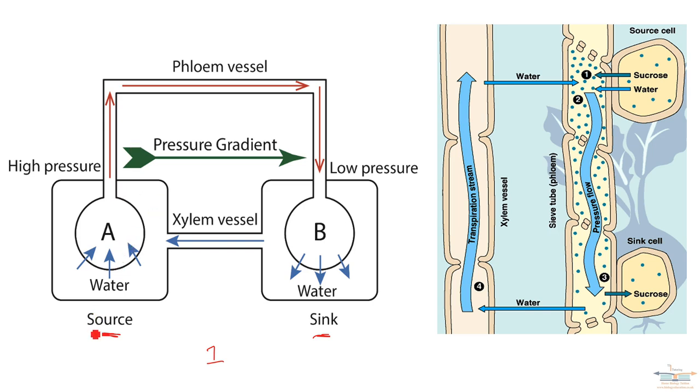So how does this work? Well, at the source, you should be able to name the source which is the leaf. And specifically, it's the palisade mesophyll cells in the leaf that will do photosynthesis and make the sucrose. So in the source, photosynthesis is happening, sugars are made. And within the cells, which is what A represents, you get an increase in the solute potential because sugars are being made.